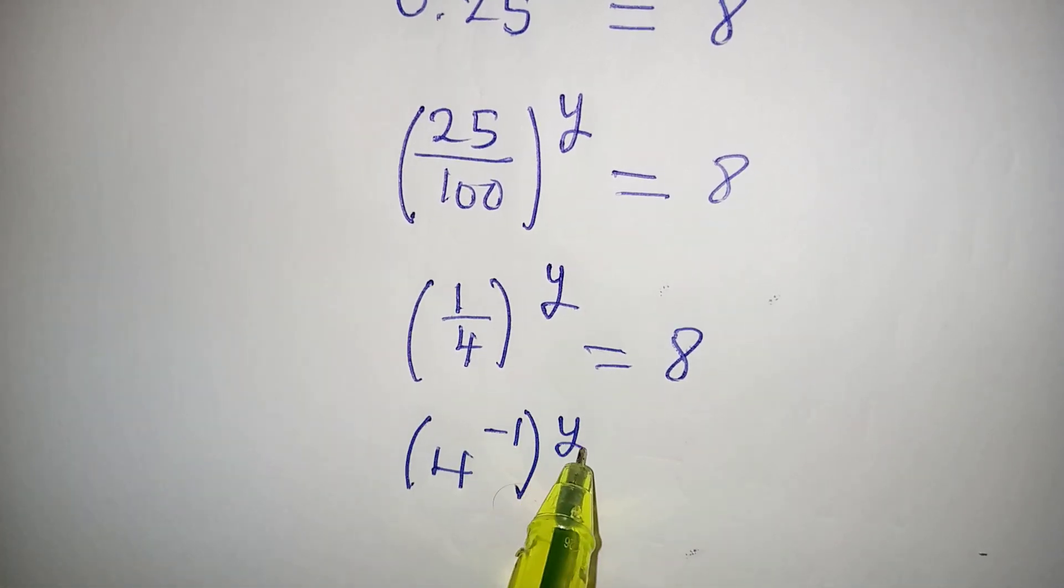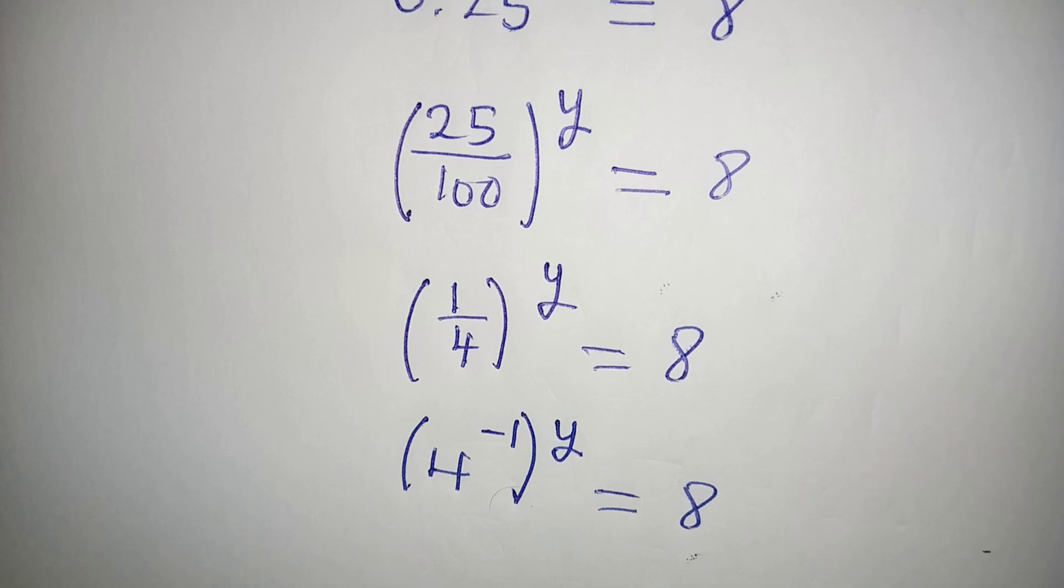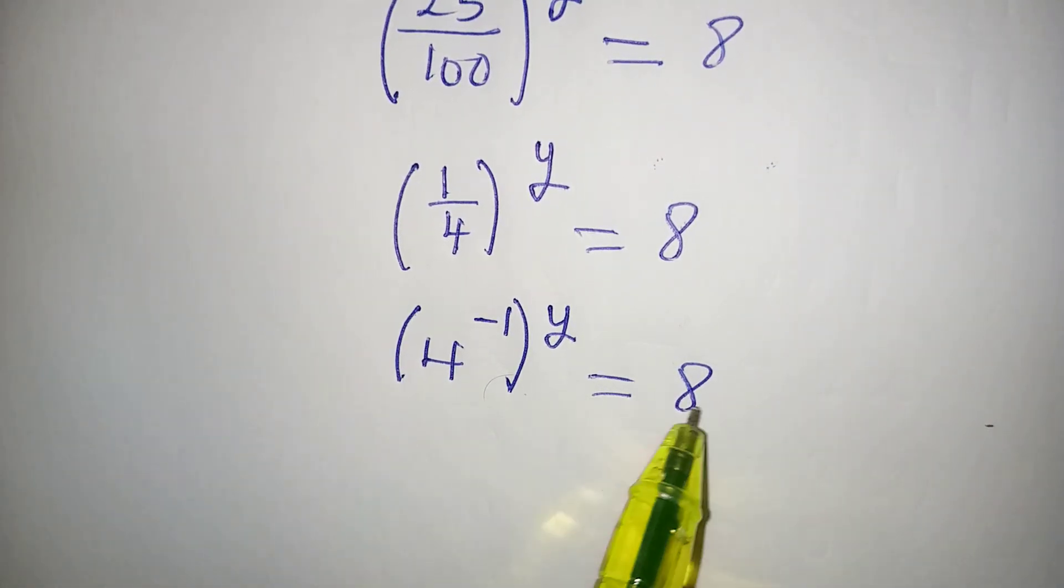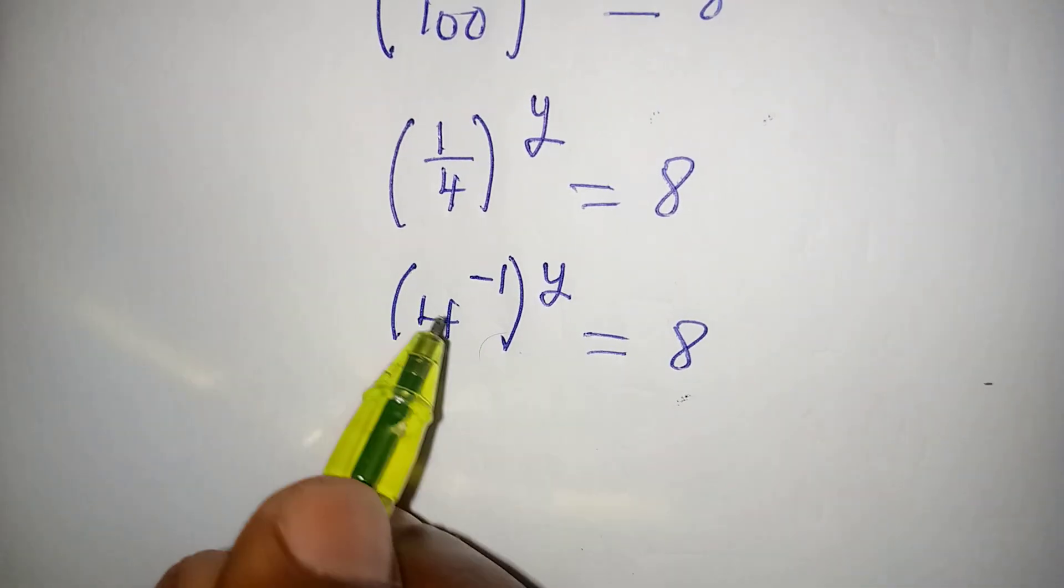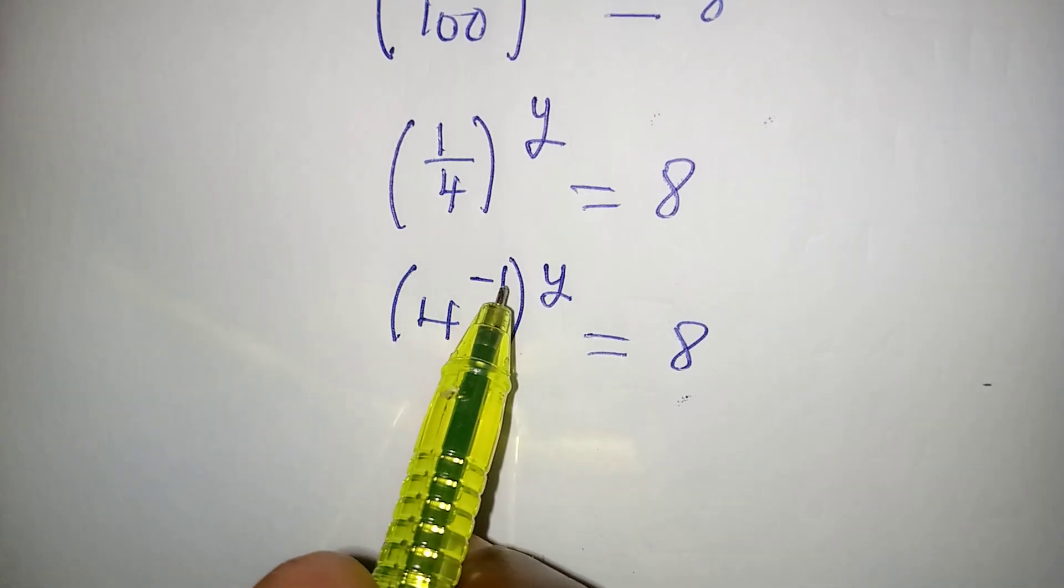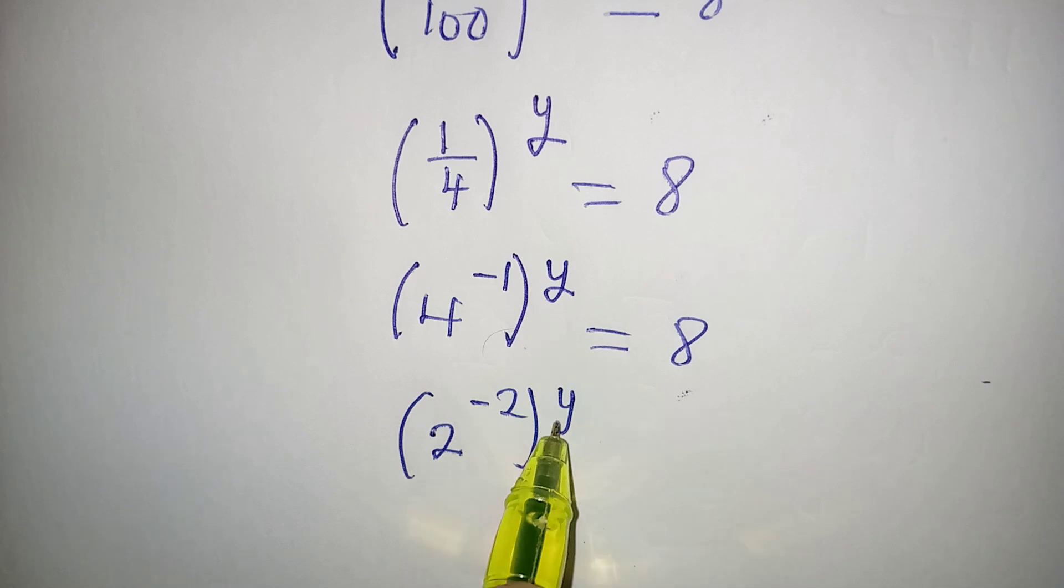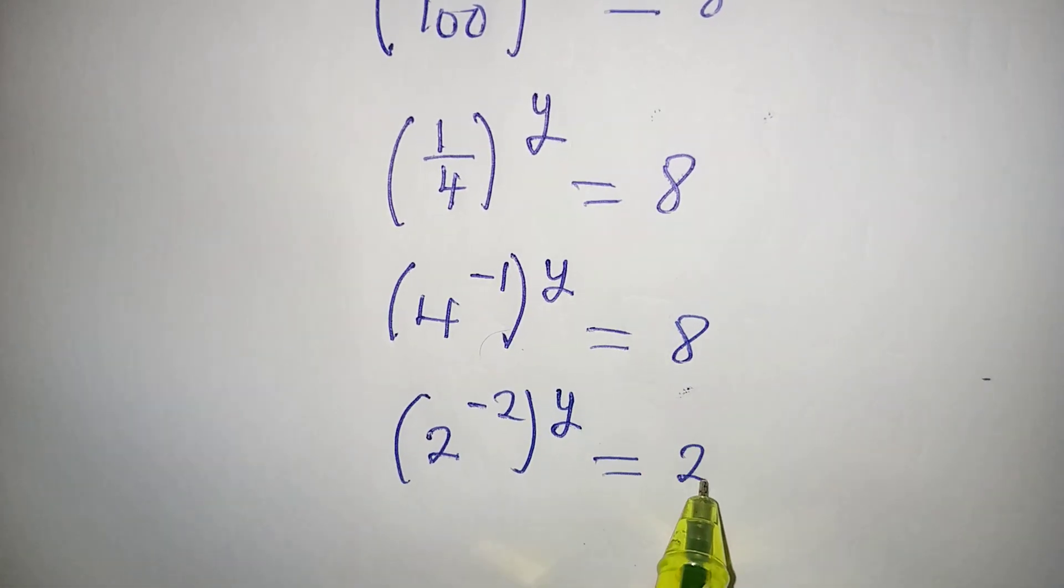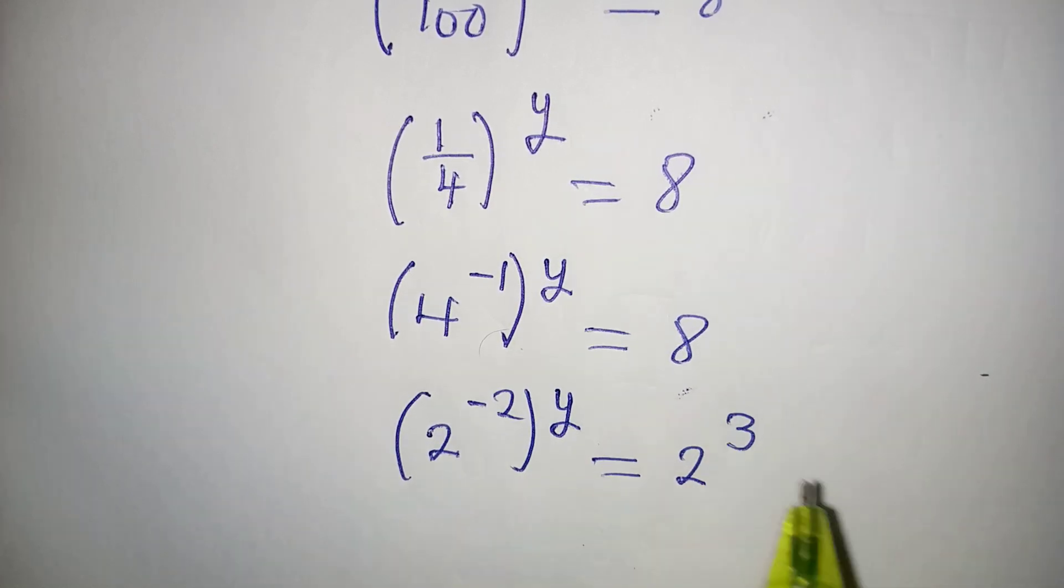Now the next thing is writing the two numbers here, this 4 and 8, in index form. 4 is 2 squared, so the square multiplied by minus 1 will give us minus 2. This y outside is still there, and this is equal to 8, which is 2 times 2 times 2, and that is 2 to the power of 3.